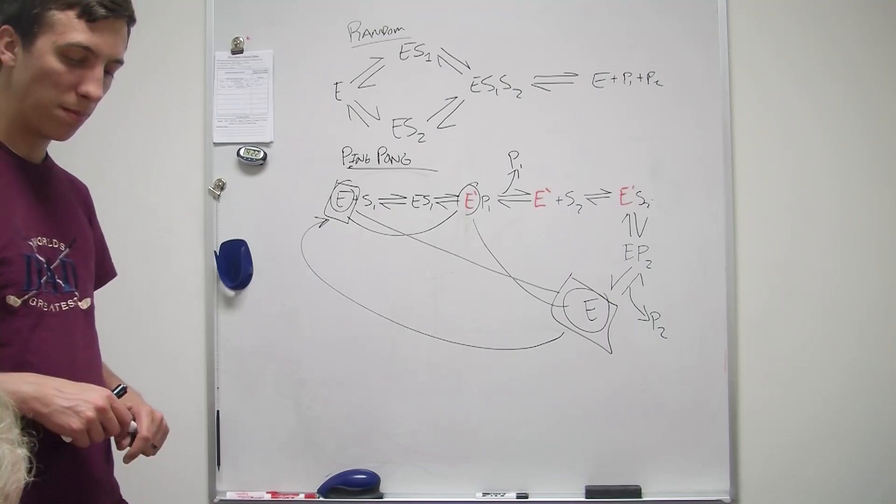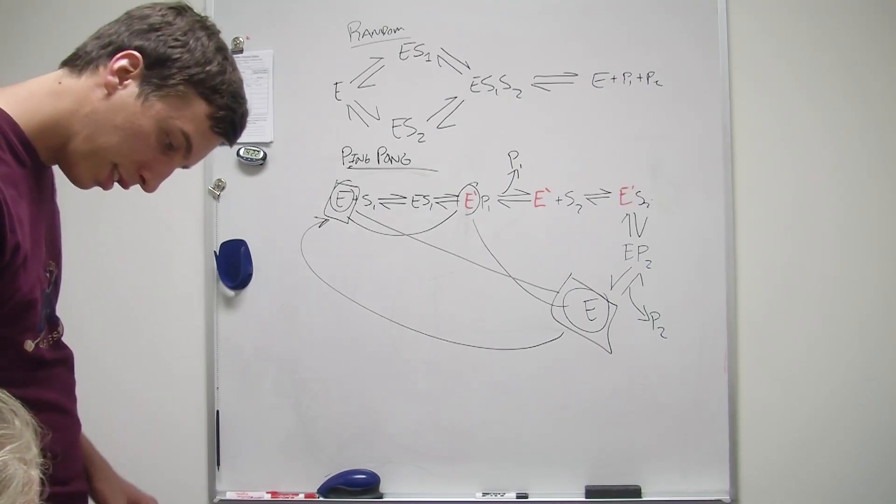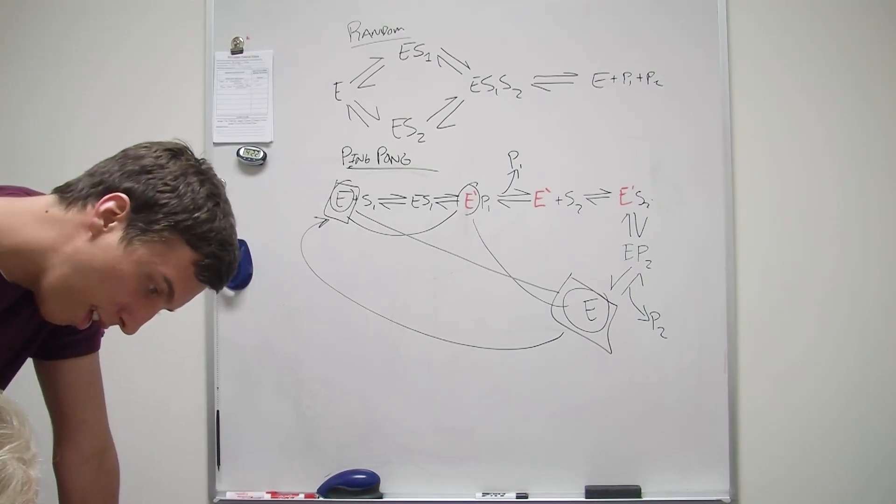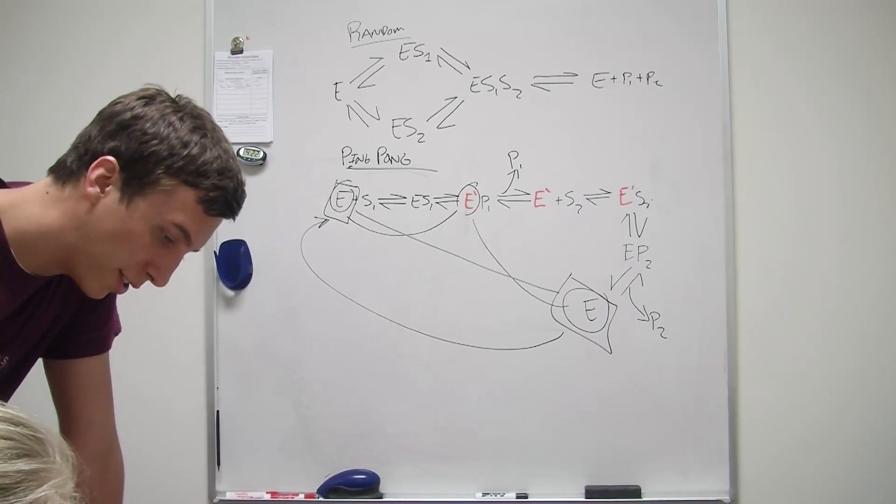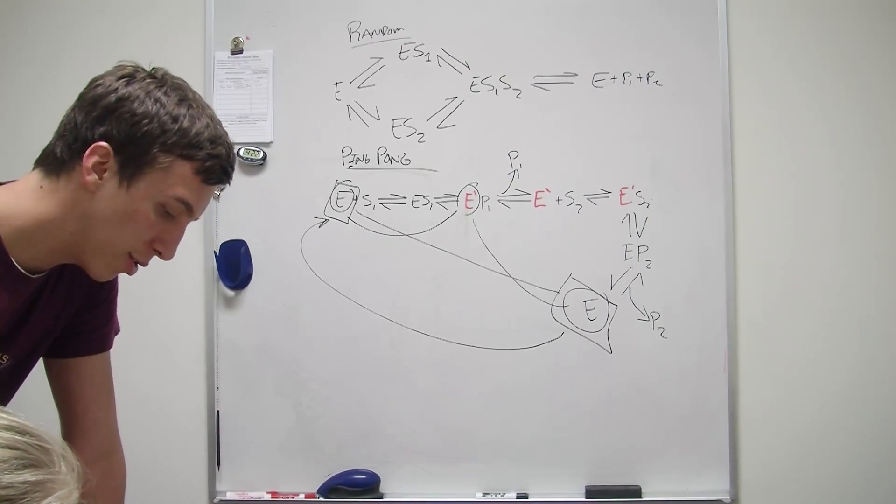So is this one random order or ordered? It's not really labeled. Let's see. Yeah, that one, the first one on page 207, only deals with forming a ternary complex.